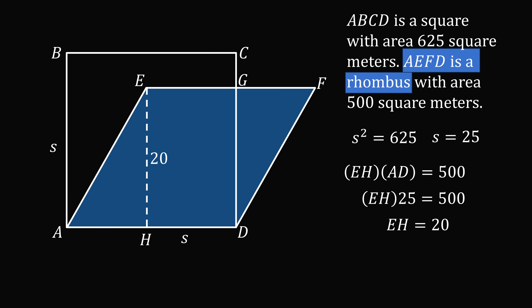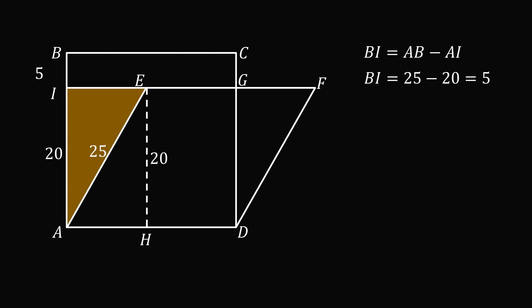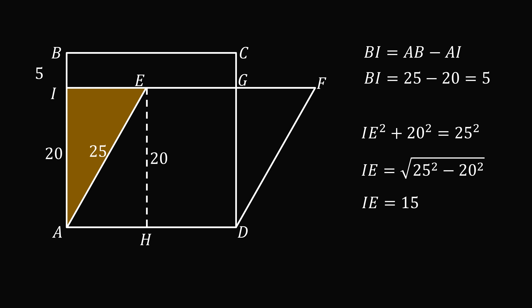Since AEFD is a rhombus, all of its side lengths have the same length. So AE = AD = S = 25. Now construct the perpendicular EI upon the side AB. AI equals HE, which equals 20. Then BI equals AB minus AI, which means BI equals 25 minus 20, which equals 5. Now let's focus on the right triangle AIE. IE squared plus 20 squared equals 25 squared, which means IE equals the square root of 25 squared minus 20 squared. So IE equals 15. This is a scaled-up 3-4-5 right triangle.